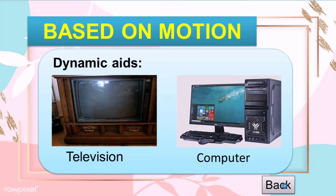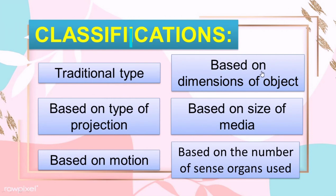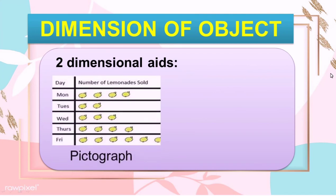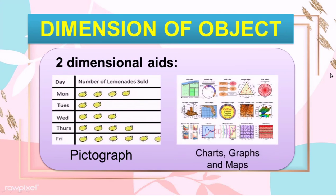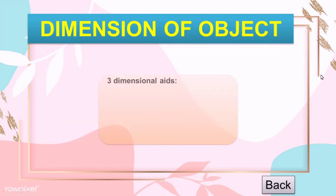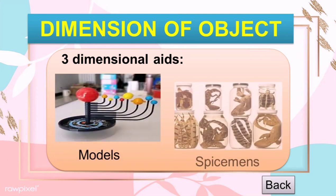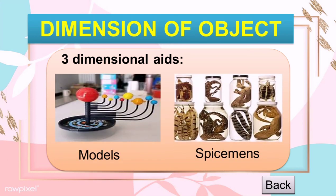The fourth classification is based on dimensions of objects. The first one is the two-dimensional aids, like pictographs, charts, graphs, and maps — in these aids, only two dimensions like width and height are visible. The second one is the three-dimensional aids, like models and specimens — these aids have three dimensions where length, width, and height are all visible.